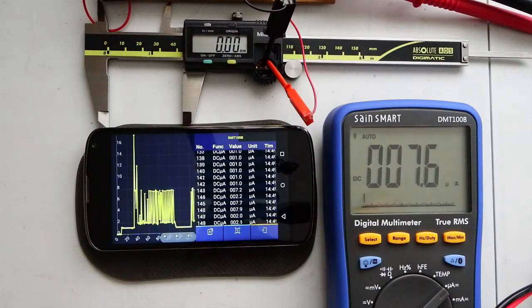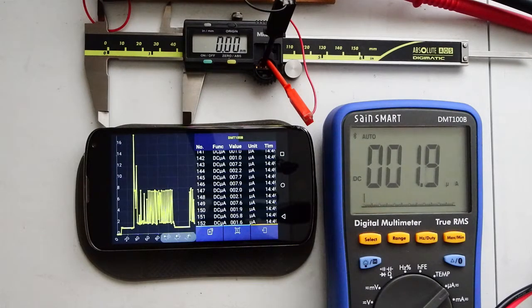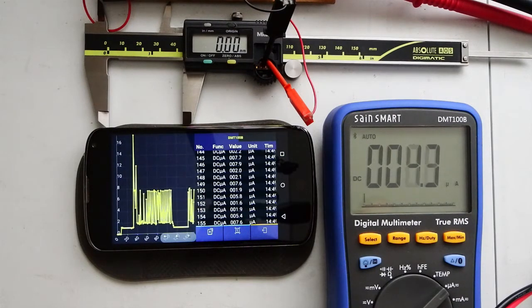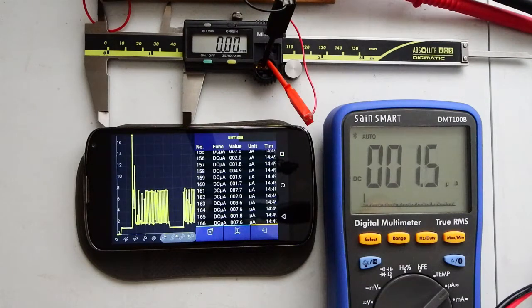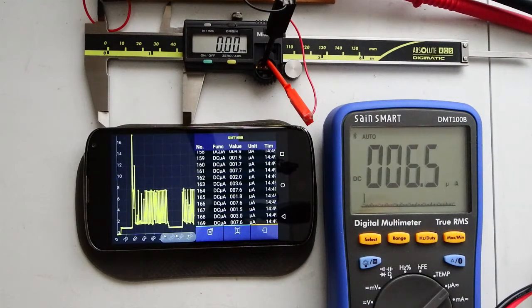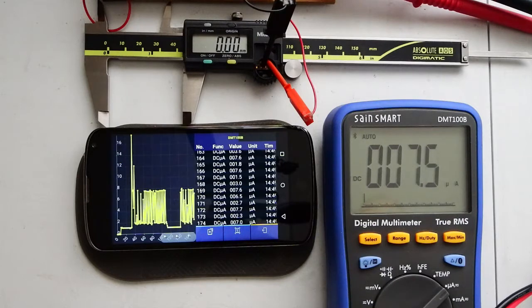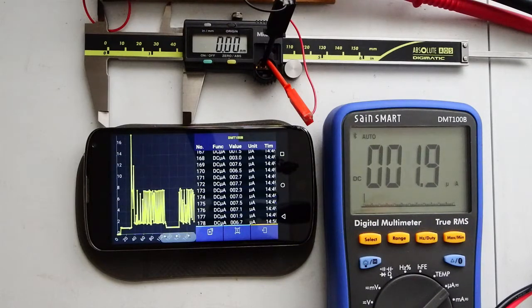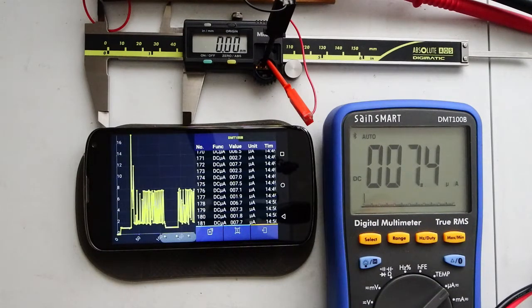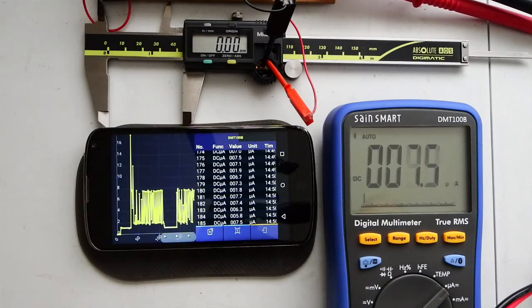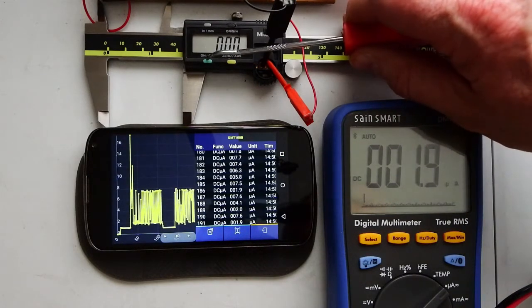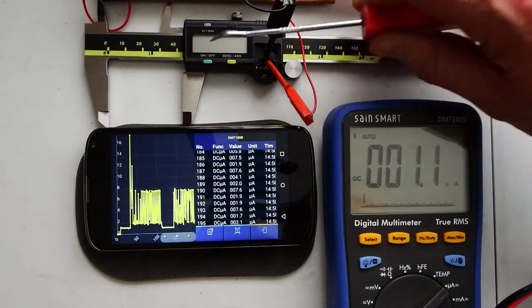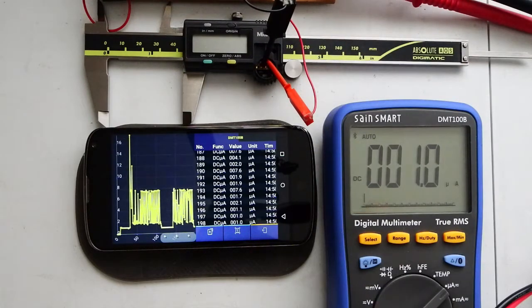Turn them back on again and it will start fluctuating between 7 or 8 or 1 or 2 microamps. That's the on current. And then the off current again, back down to 1 microamp.